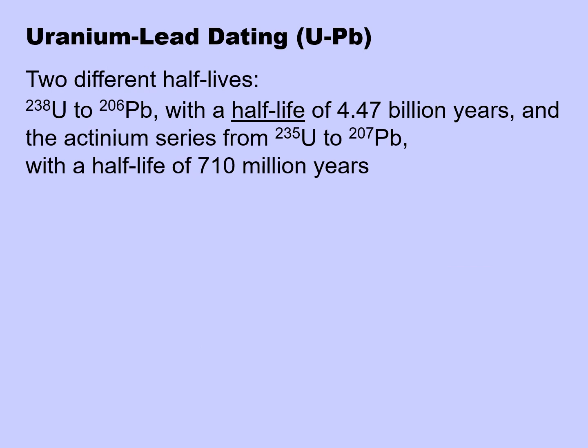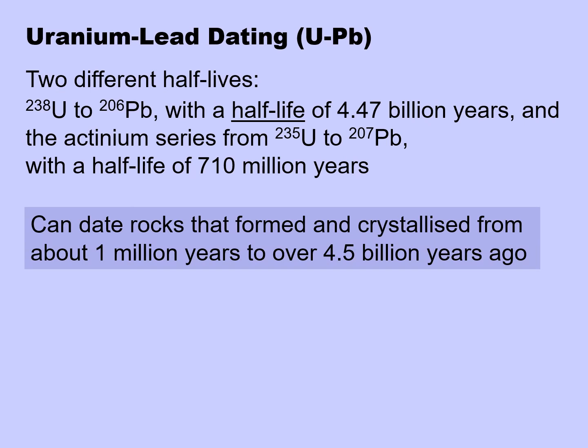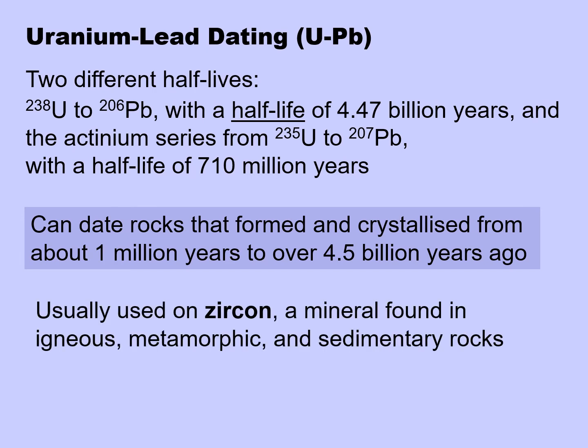Uranium-lead dating is a bit more complicated because we have two different half-lives depending on the isotopic number of the uranium. But it can date rocks that formed and crystallized from about 1 million years to over 4.5 billion years ago. It's usually used on zircon, which is a mineral found in igneous, metamorphic, and sedimentary rocks.